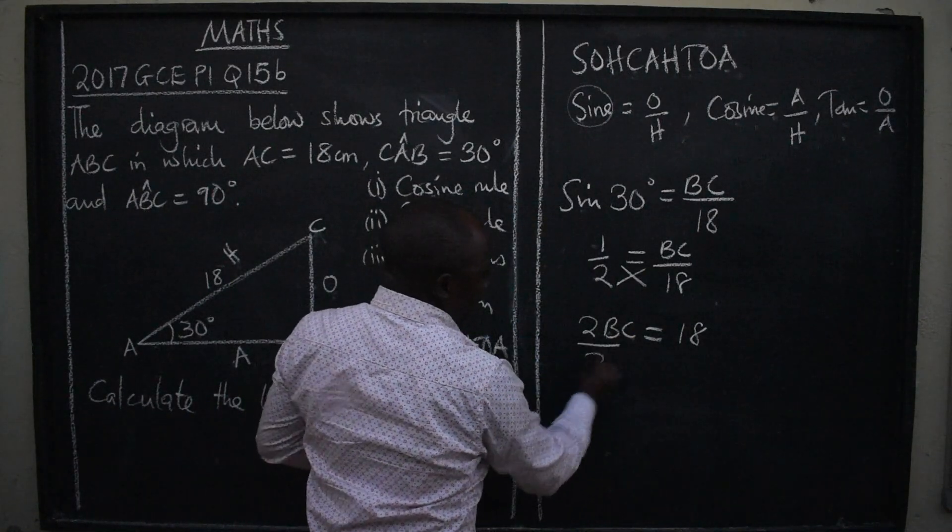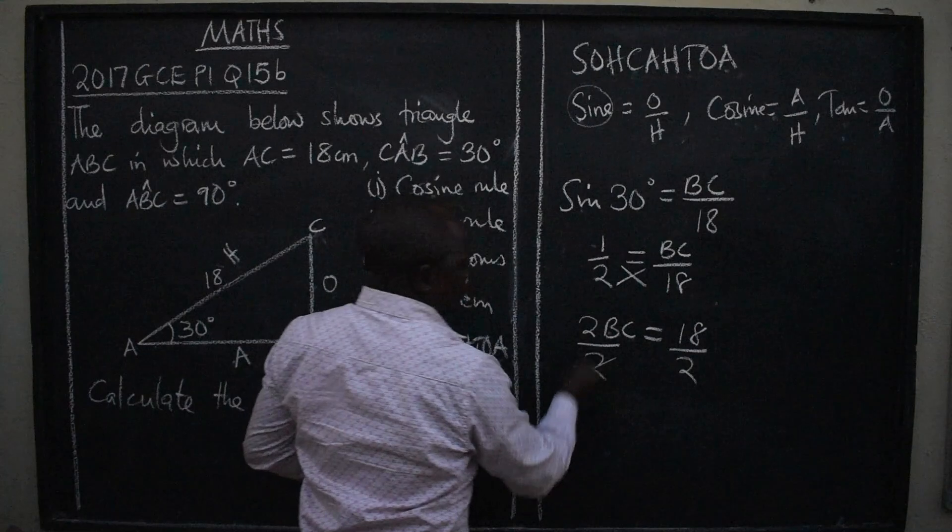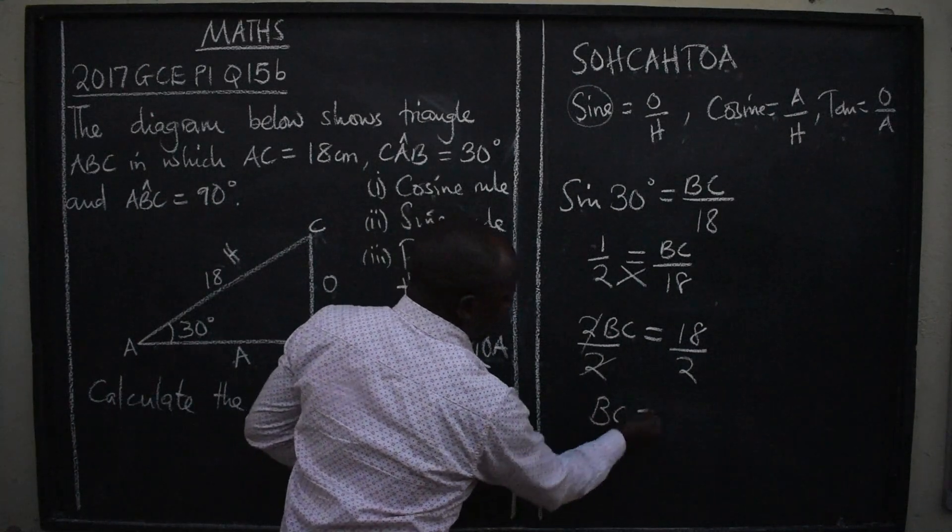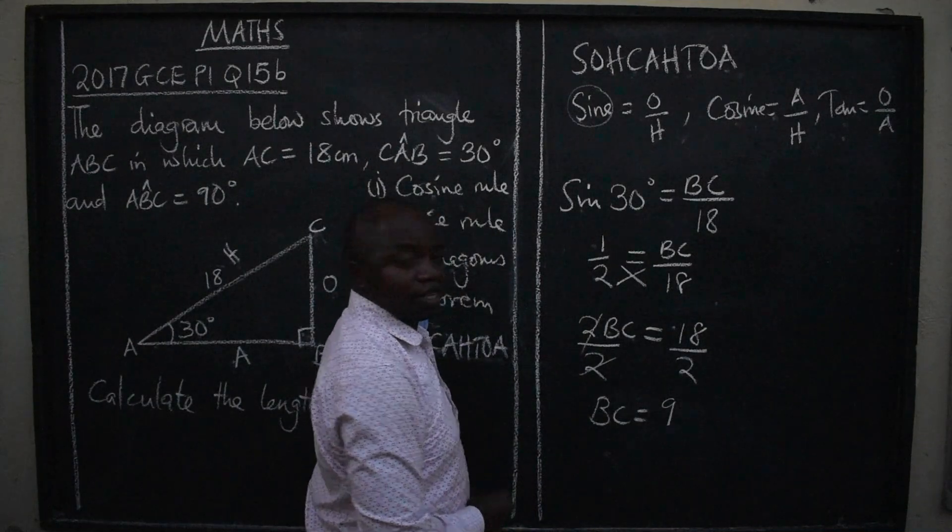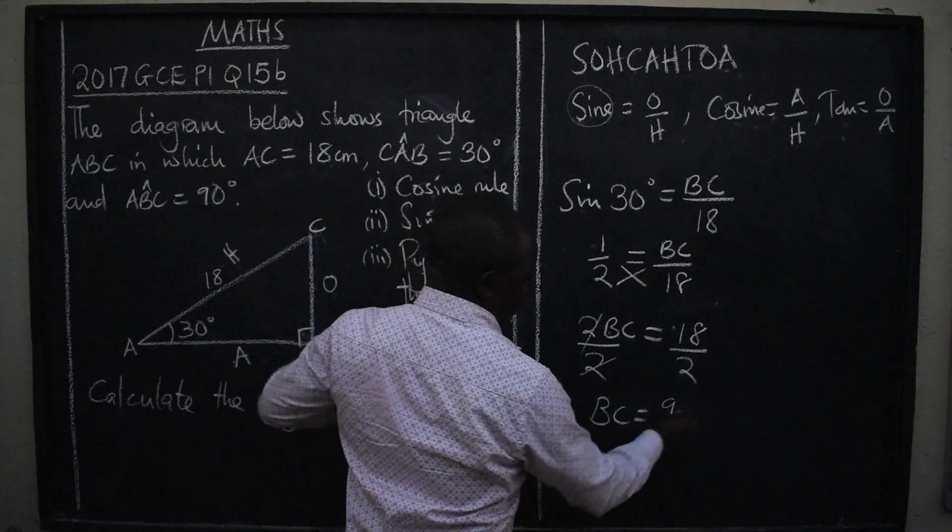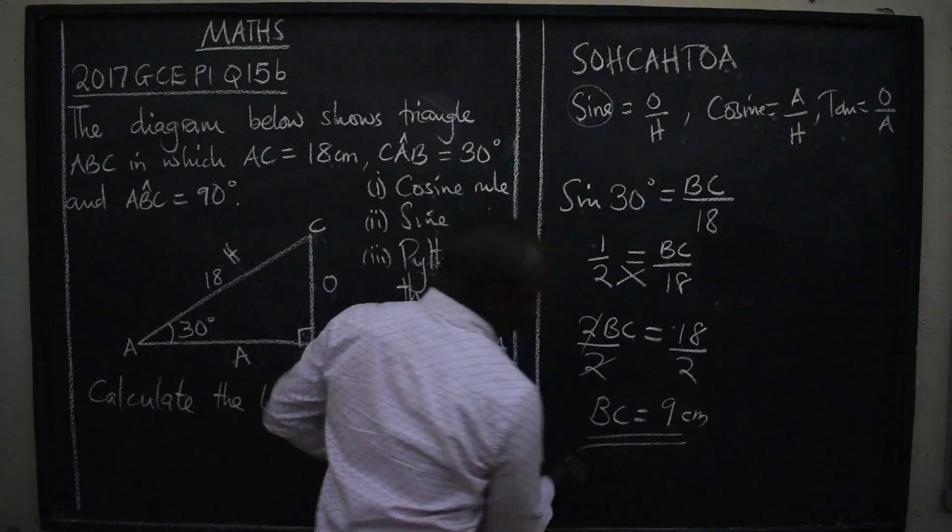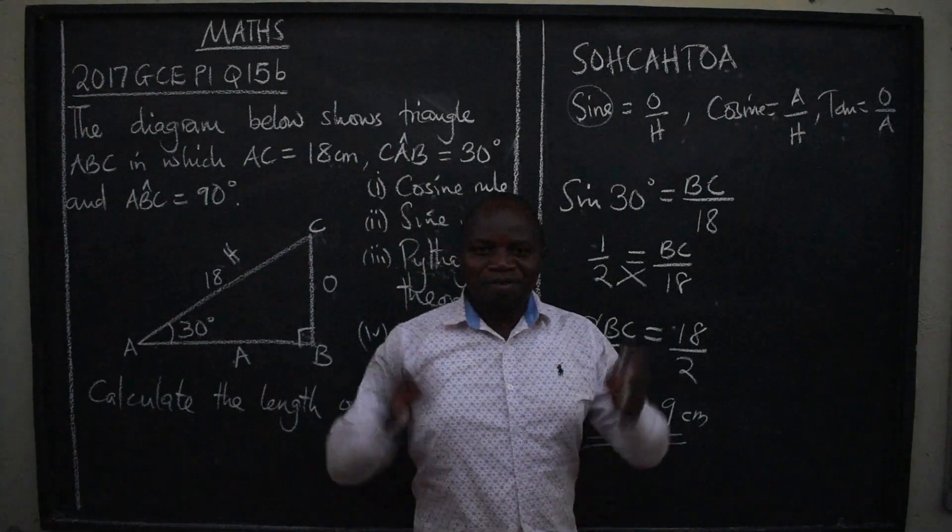To remain with BC, divide by 2. Divide by 2. Cancel this. BC will be equal to how many 2's are in 18? 9. What are the units? Centimeters. Centimeters. Just like this. Bye-bye.